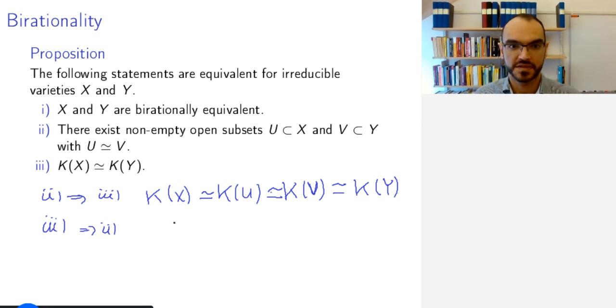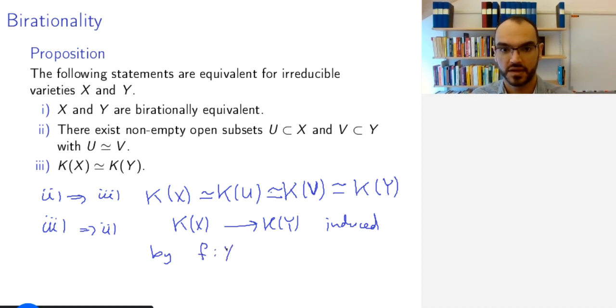this isomorphism K(X) to K(Y) is induced by a map, a birational map necessarily f from X to Y with inverse in the sense of birational maps g from Y